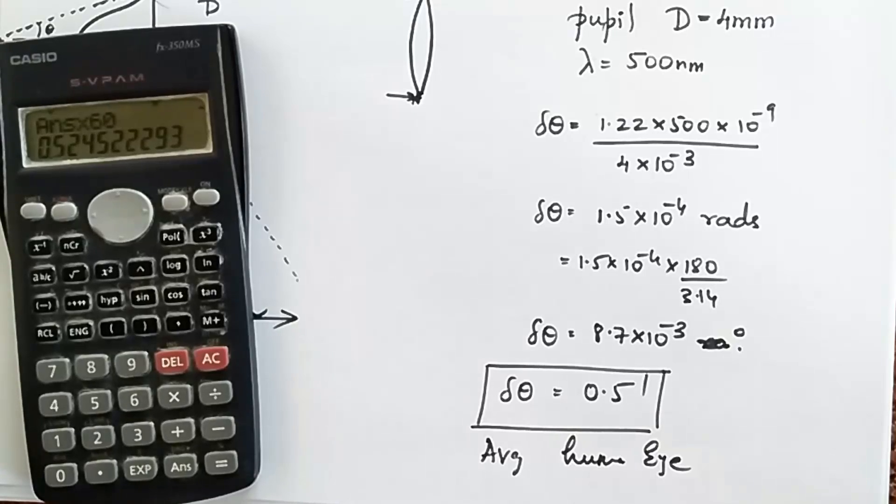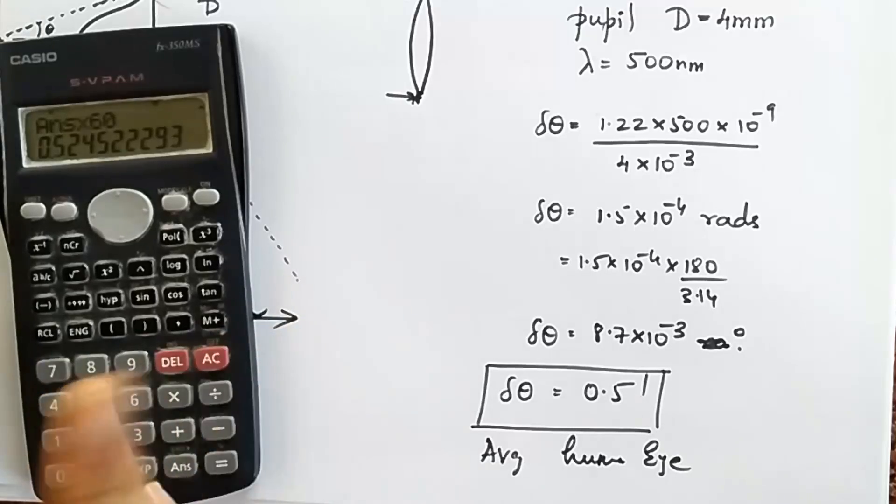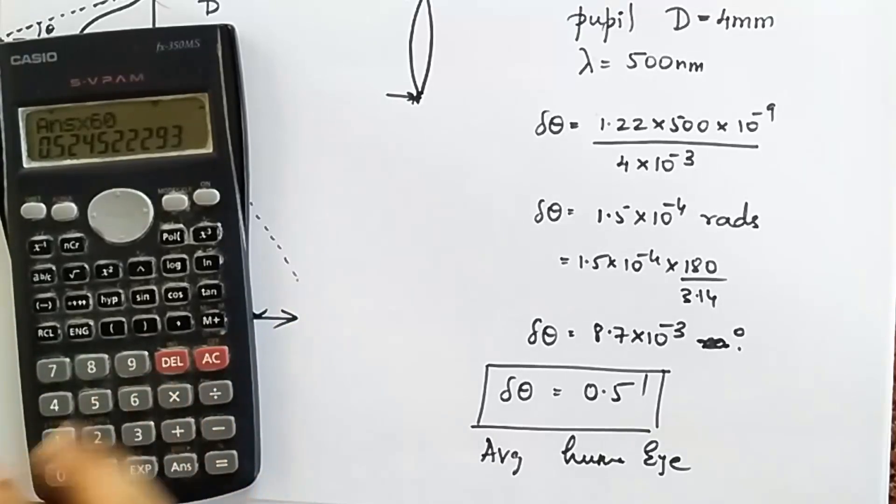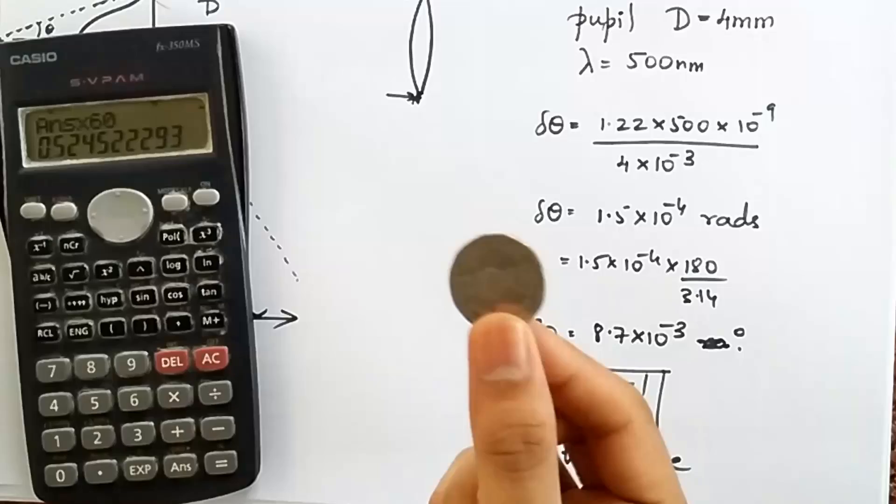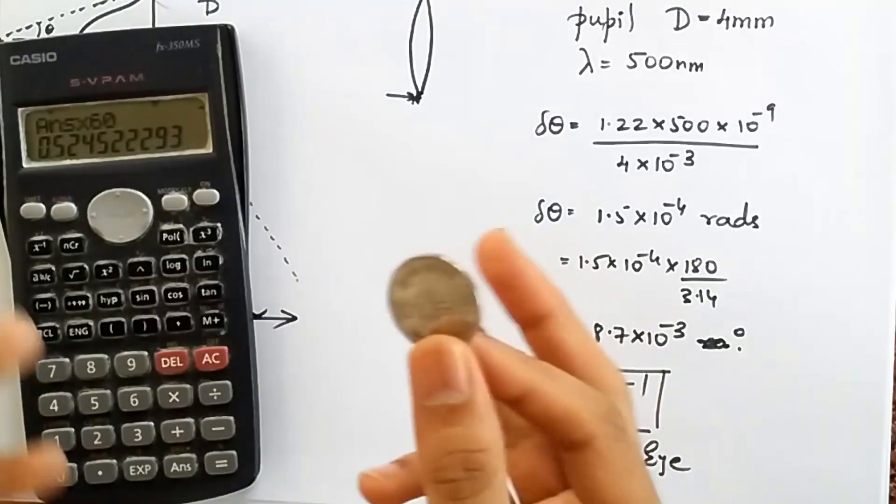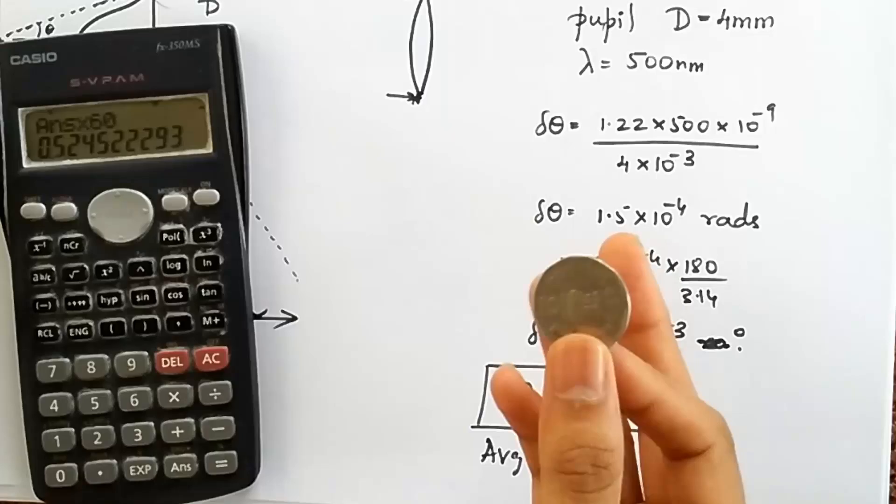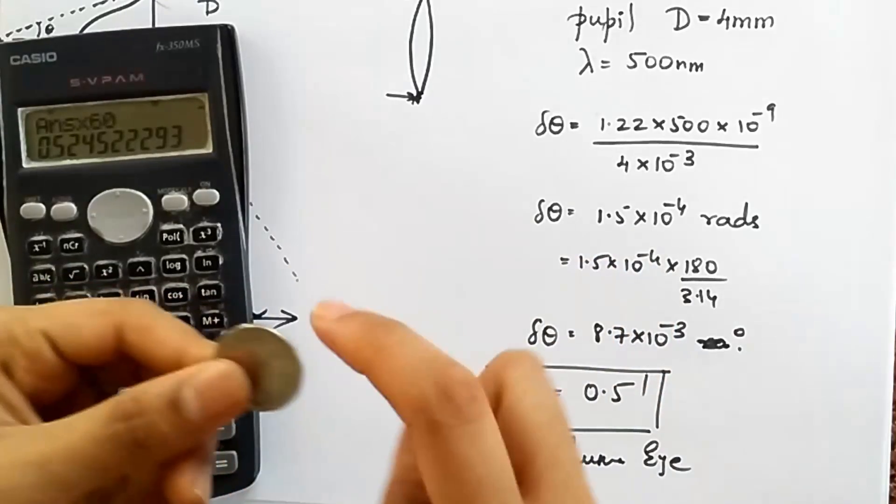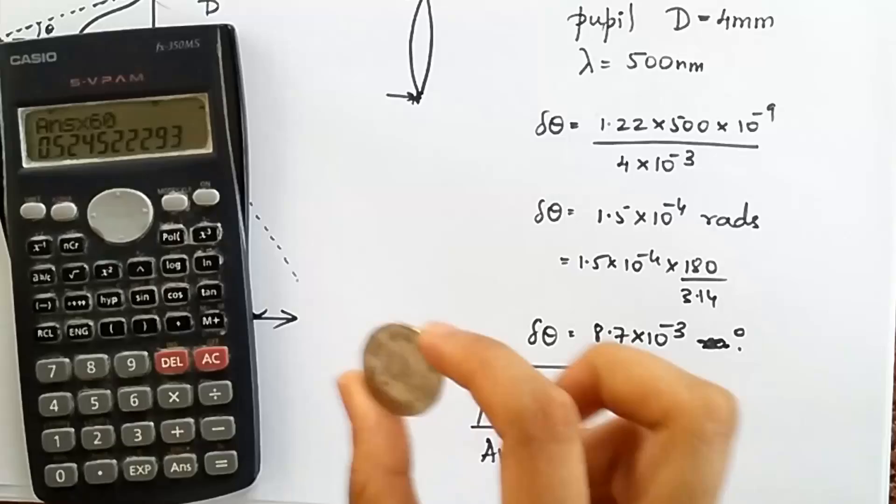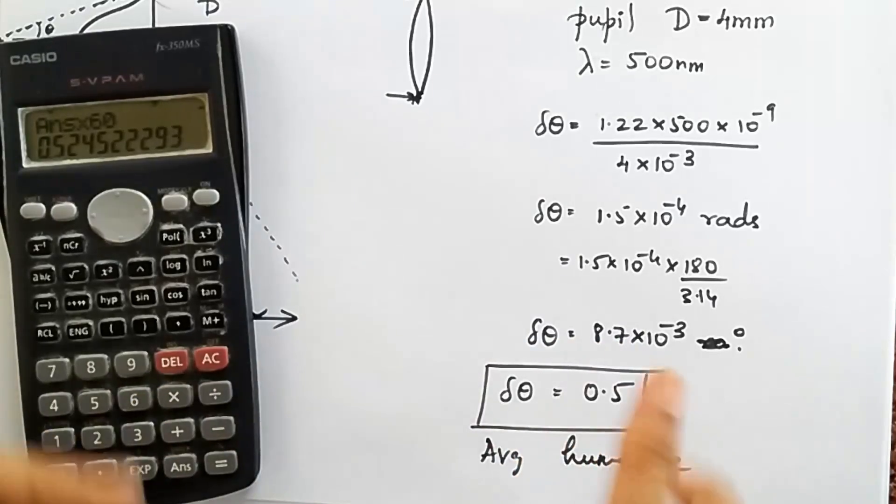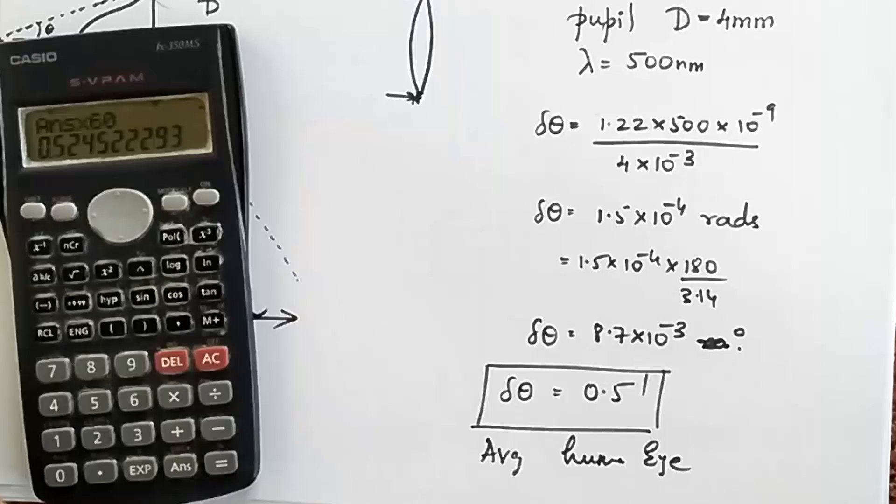What this means is that if you have two sources which are so close to each other that they subtend an angle smaller than half an arc minute, then you can't see them to be two sources anymore. And to give you a rough idea of how big one arc minute is, if you take a two rupee coin which is over here and if you keep this two rupee coin about a hundred meters away, then the two ends of the coin, the diametrical ends of the coin, will be roughly about one arc minute, one arc minute apart.